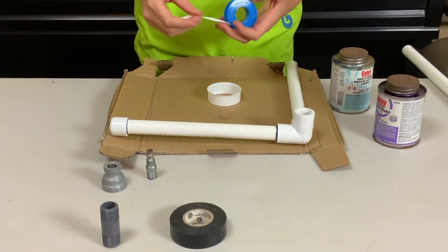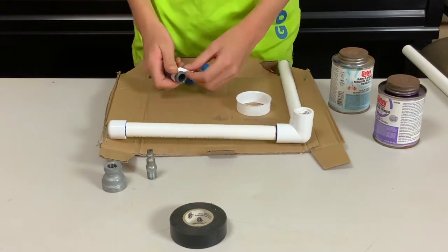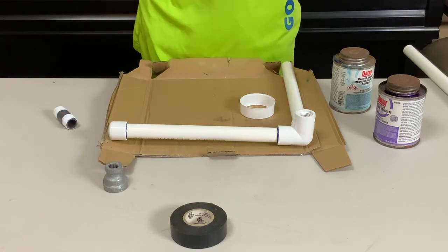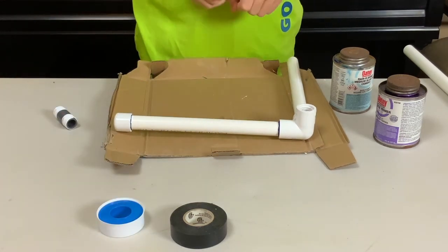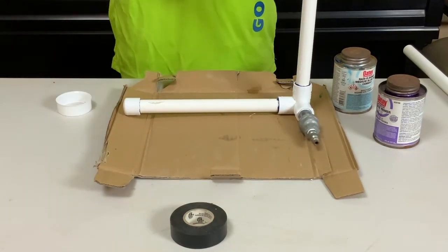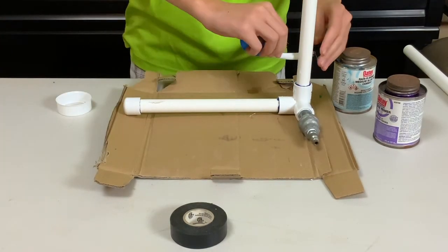Use Teflon tape on the threads of all threaded connectors and attach the PVC threaded connector to the reducer and the air compressor fitting and connect that all to the 90 degree elbow. Wait at least three hours for the PVC glue to dry completely.